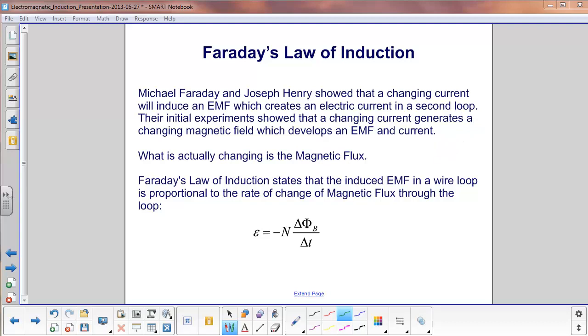Their initial experiment showed that a changing current, which generated a changing magnetic field, would develop an EMF, which again is just a voltage. And once you have voltage applied to a circuit, current carrying wire, you will get a current. However, what is really changing is the magnetic flux.